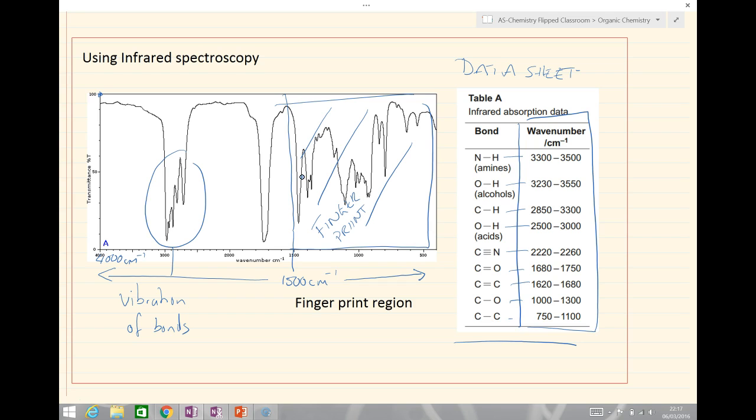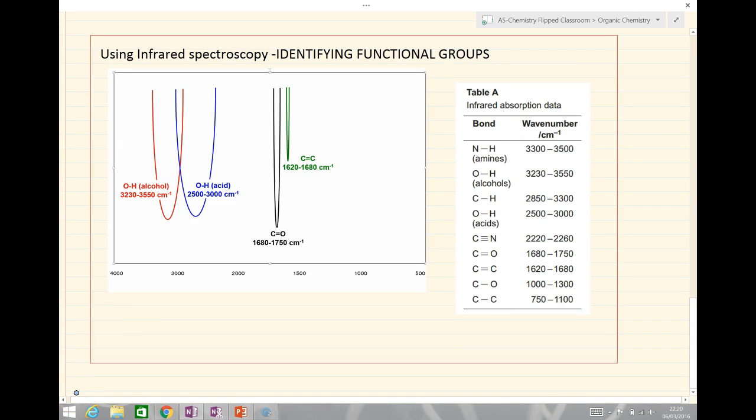Now we're going to look specifically at the region above 1500 cm-1 and see if we can work out some example spectra with each of these absorptions. We're going to be identifying functional groups. Our key functional groups can be summarized in this drawing. At 1620 to 1680 cm-1, we get our carbon-carbon double bond indicating an alkene is present.